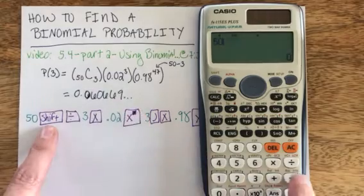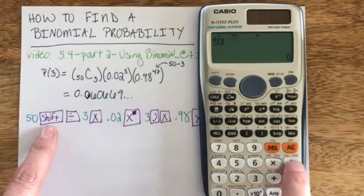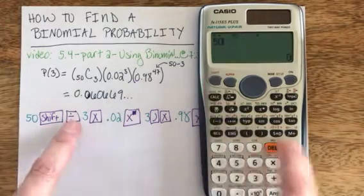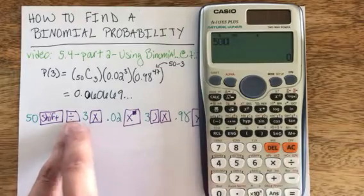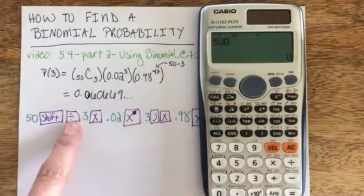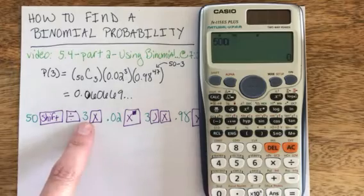combination button, since it's in yellow above the division symbol, I need to hit shift to access the yellow button. So shift and divide gives me the C for nCr. R is the same thing as x in a binomial, so I find the combination of 50 items choose 3.